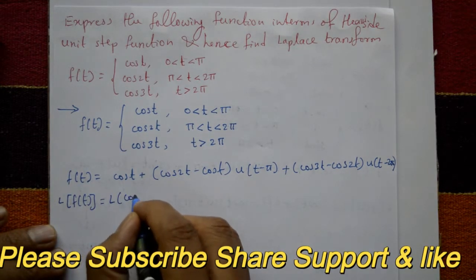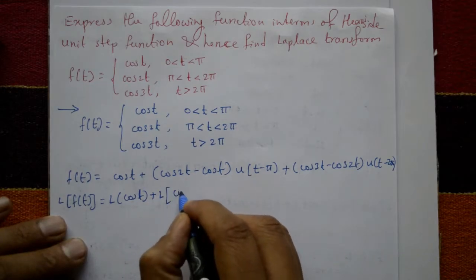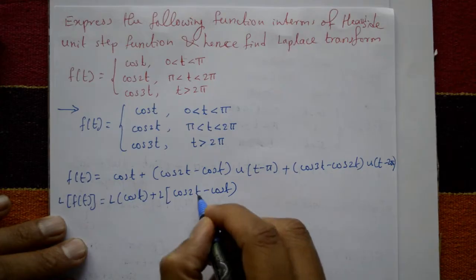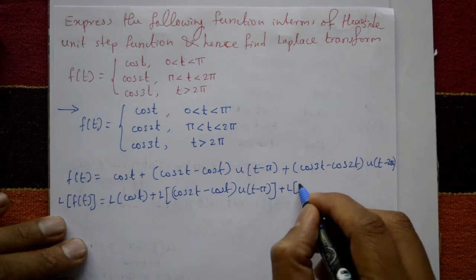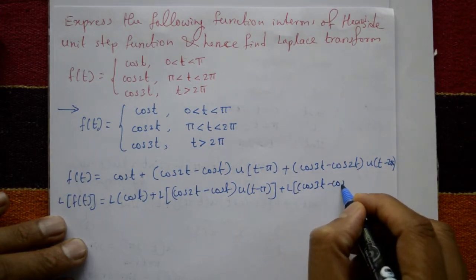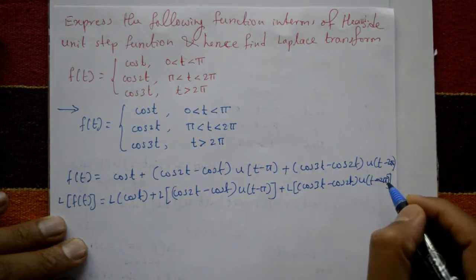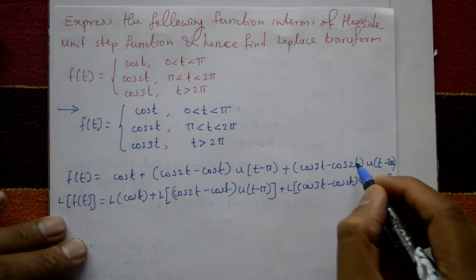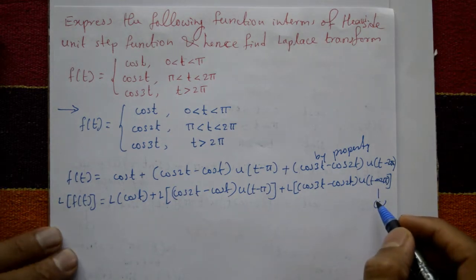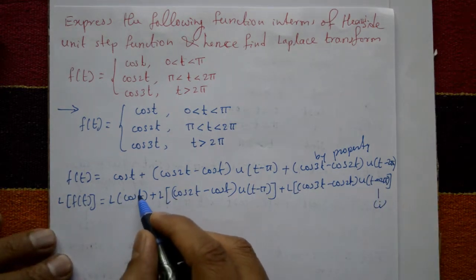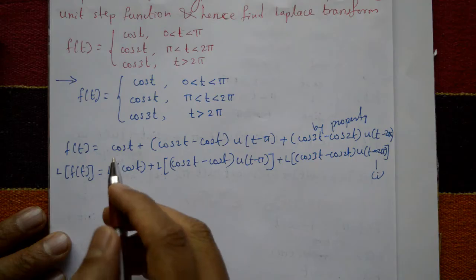L{f(t)} equals the Laplace of cos t, plus the Laplace of (cos 2t − cos t) · u(t − π), plus the Laplace of (cos 3t − cos 2t) · u(t − 2π). Call this equation number one. The first term gives s/(s² + 1). Now solve the second and third terms using one more property.